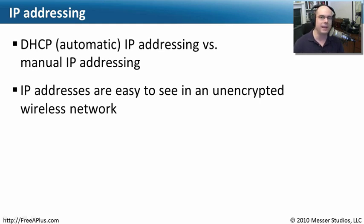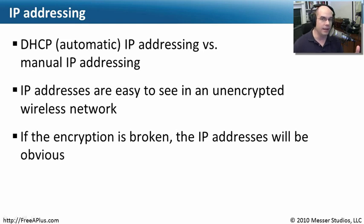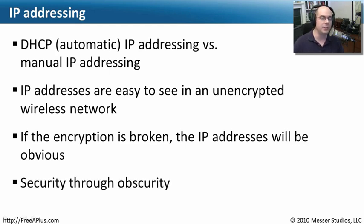If it's an unencrypted network, I can very easily perform a packet capture and see the IP addresses in use. If it's an encrypted network, it's harder to see that information — but if somebody breaks your encryption, they will be able to see the IP addresses. So again, you shouldn't consider manual or automatic IP addressing to be a security measure just because you're trying to make something more obscure. Use it as an administrative tool to manage who gets onto the network.